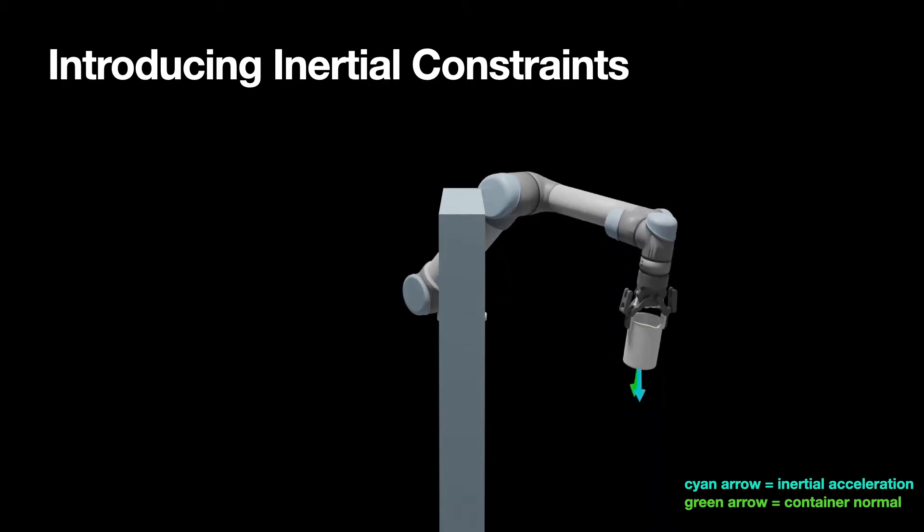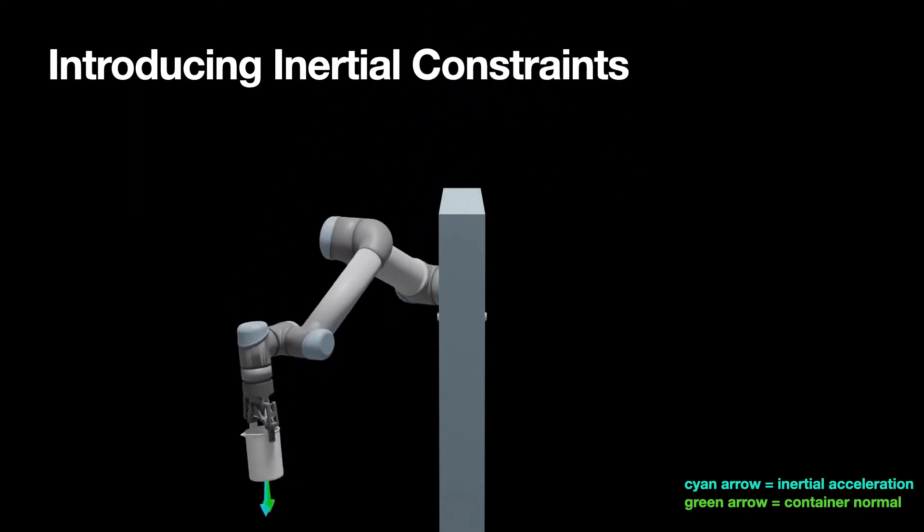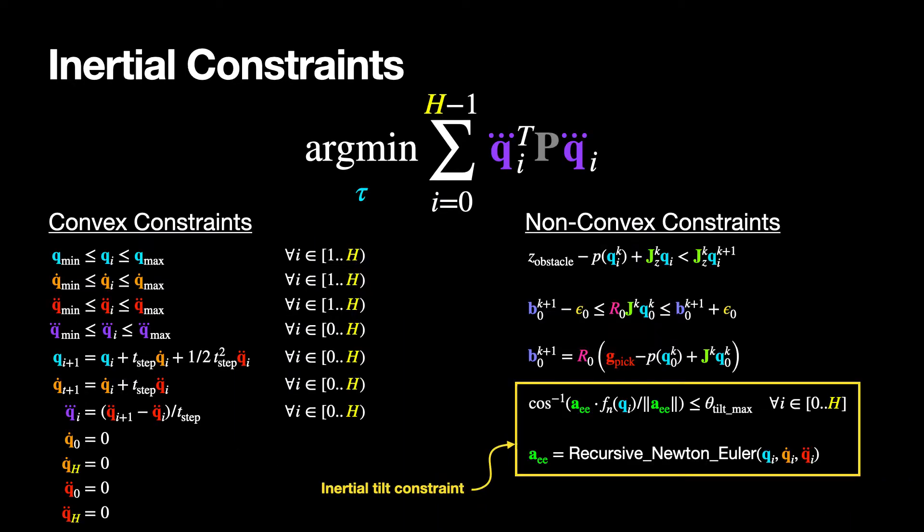To address these negative outcomes, we propose incorporating end-effector acceleration limits and formulate constraints using a recursive Newton-Euler computation. With these constraints, we limit angular difference between inertial accelerations and the angle needed to keep contents in the container.